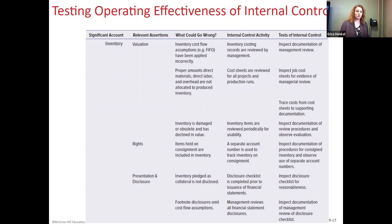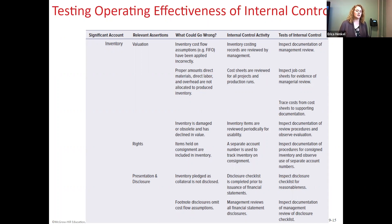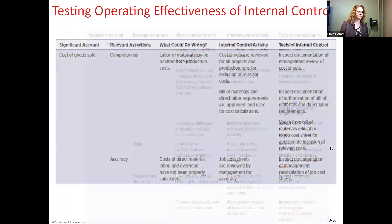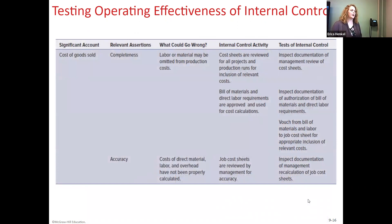For presentation and disclosure, there should be a checklist completed prior to financial statements. Auditors will use that same checklist to review that everything's recorded correctly. They review all financial statement disclosures to make sure they make sense and that management has made their representation that the amounts are accurate. Cost sheets get reviewed for production runs and inspected by management. You can also vouch bills of materials and labor to job cost sheets for inclusion of relevant costs.